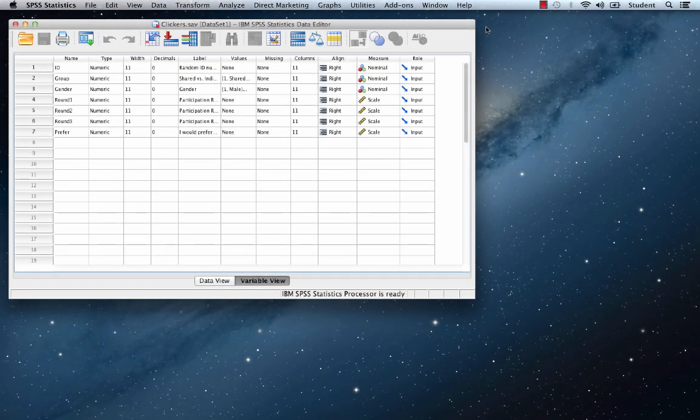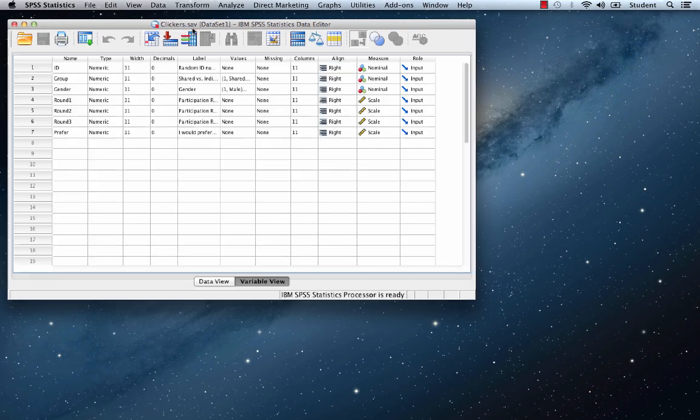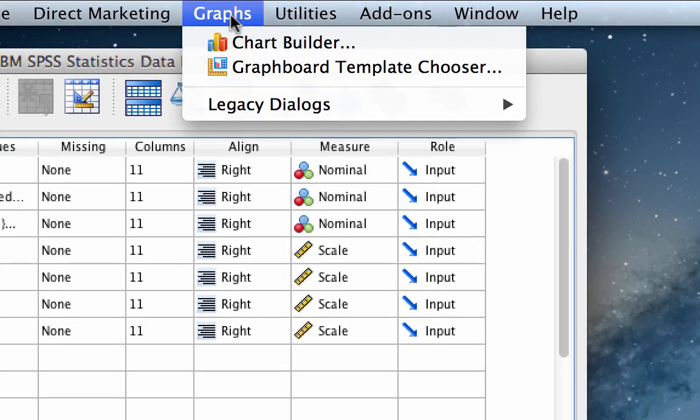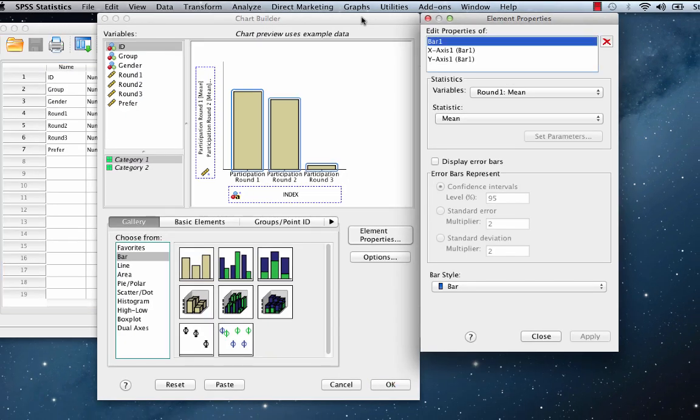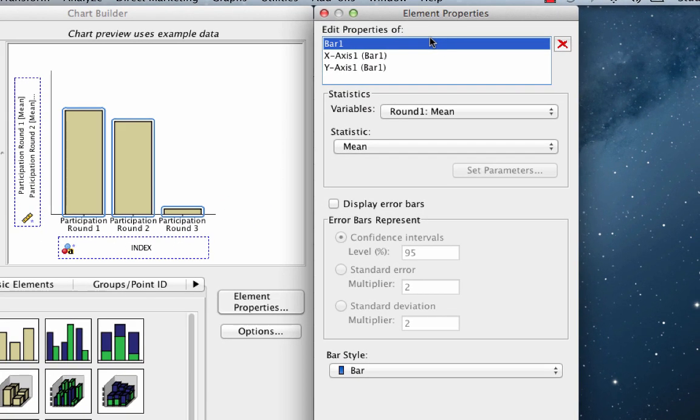We are still using the dataset clickers.sav. Go to graphs, chart builder. You notice that the settings from the previous bar chart are still in place. Don't change anything. Let's just look at the element properties window. Now notice here that the statistic being represented by the yellow bar is the mean.